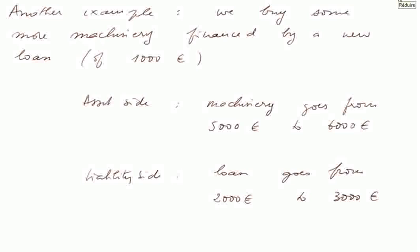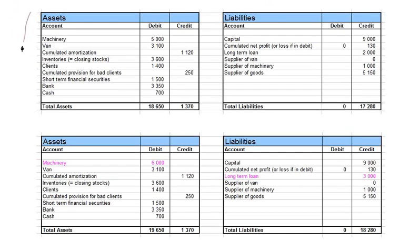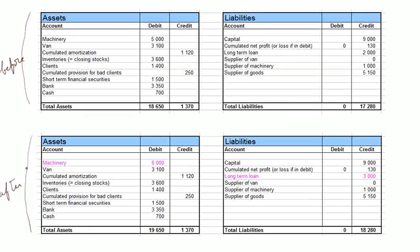Here's another example. Suppose we buy some more machinery financed by a new loan of 1,000 euros, because the machinery costs 1,000 euros. On the asset side, the machinery account will have a balance going from 5,000 to 6,000 euros. And on the liability side, the loan account will go from 2,000 euros to 3,000 euros. Here is the balance sheet before, and here is the balance sheet after this new loan to finance machinery. So the machinery was 5,000, it becomes 6,000, and the loan was 2,000, it becomes 3,000.